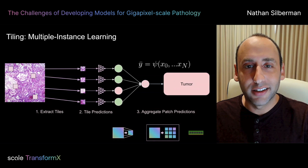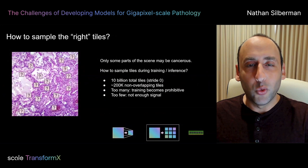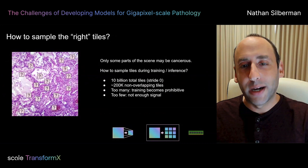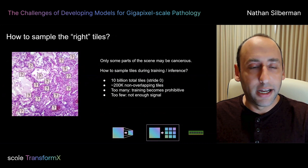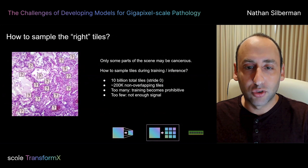But it does leave us with a very big open question: how do we go about choosing which tiles to sample during both training and inference? We clearly cannot use every single tile in an image. At gigapixel scale, there are about 10 billion total tiles to choose from. And even if we wanted to use only non-overlapping tiles during training, that still leaves us with about 200,000 tiles to perform inference on before we can get the final slide-level score — really prohibitively expensive.